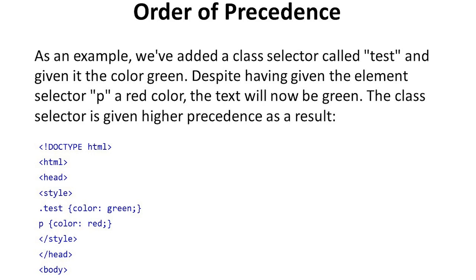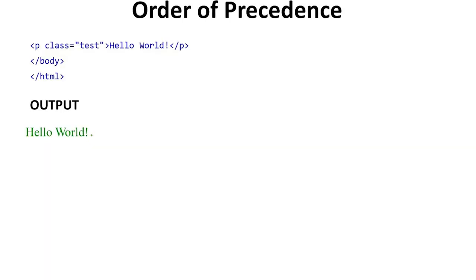As an example, we added a class selector called 'test' and given it color green. Despite giving the element selector P a red color, the test class will now be green because the class selector has higher precedence. In this example we see that in the style tag we define class 'test' with color green and P with color red. In the body, P with class equal to 'test' contains 'Hello World'. The output is 'Hello World' in green, not red.